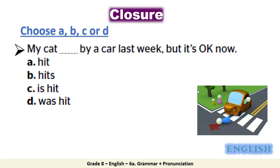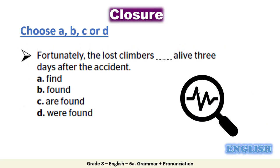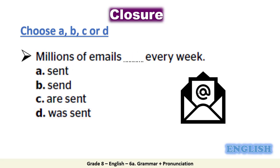Now let's check your understanding. Choose the correct answer A, B, C, or D. Number 1: 'My cat ___ by a car last week but it's okay now.' Answer: D — 'was hit.' Number 2: 'Fortunately, the lost climbers ___ alive three days after the accident.' Answer: D — 'were found.' Number 3: 'Millions of emails ___ every week.' Answer: C — 'are sent.'